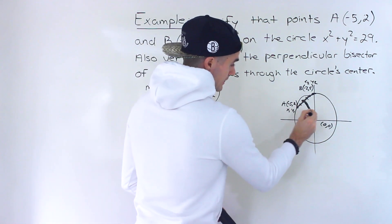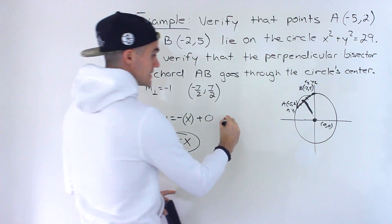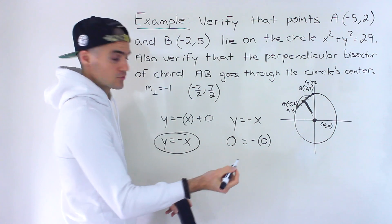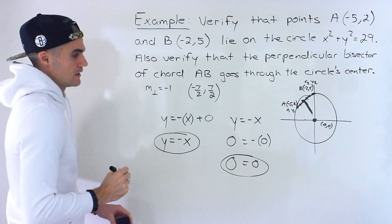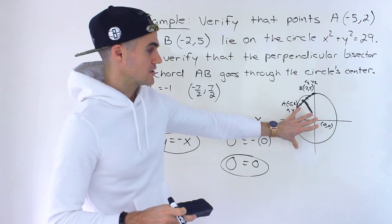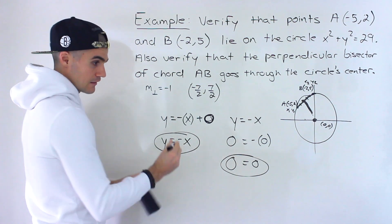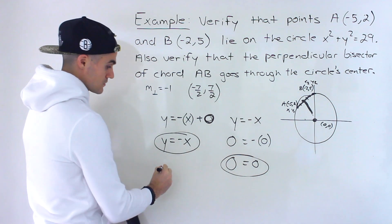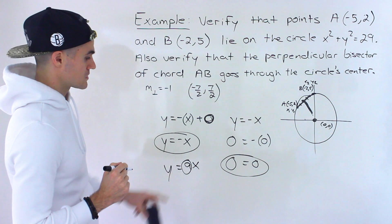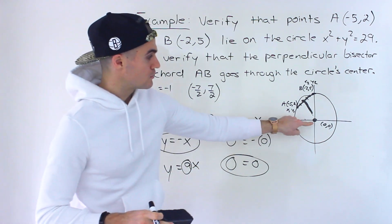To verify the line goes through the center 0, 0, we plug x equals 0 and y equals 0 into y equals negative x, and indeed the left side equals the right side. For circles centered at 0, 0, the perpendicular bisector will always have a b value of 0, so it's always in the form y equals ax. Any line through the origin satisfies this.